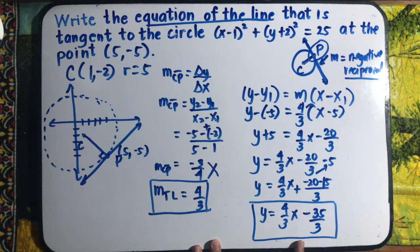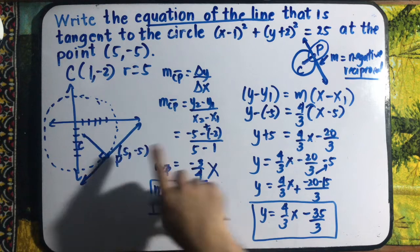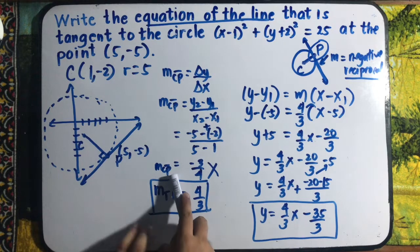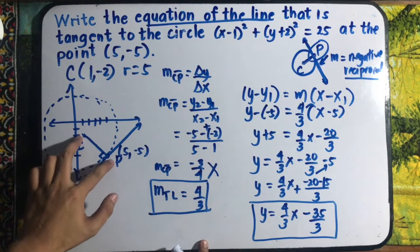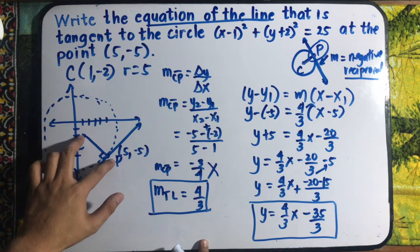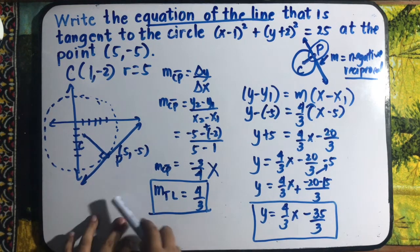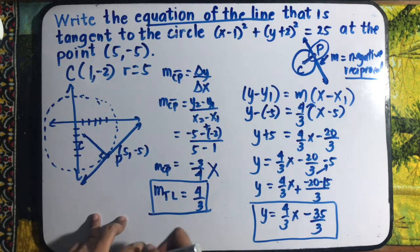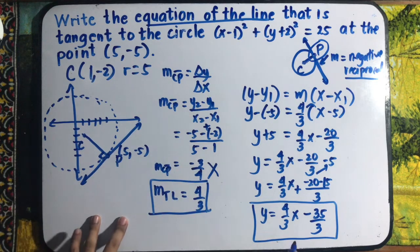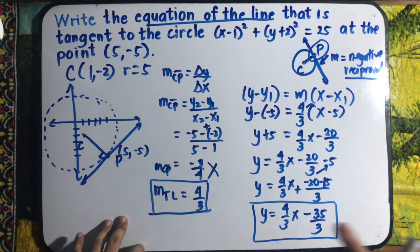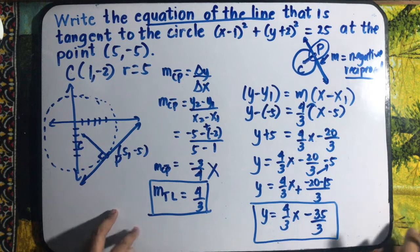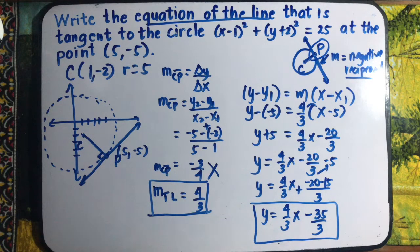This is the equation of the line tangent to the circle (x − 1)² + (y + 2)² = 25 at the point (5, −5). Remember that the slope of the tangent line is the negative reciprocal of the slope of the line connecting the center and the point. We used the point-slope form to get the equation of the tangent line.